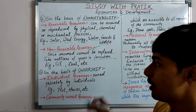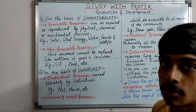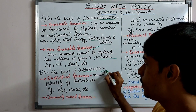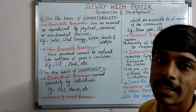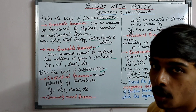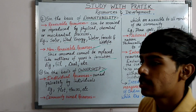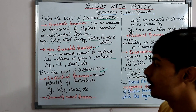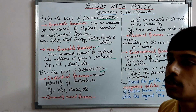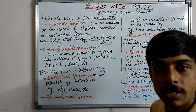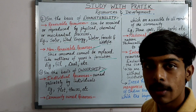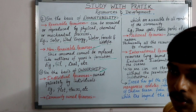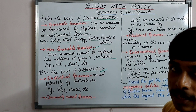Now let's discuss the classification of resources on the basis of ownership — 'swamitwa'. Based on how much right anyone has over a resource. Individual resources are those privately owned — plots, houses, wells, farm houses — things which are individually owned.